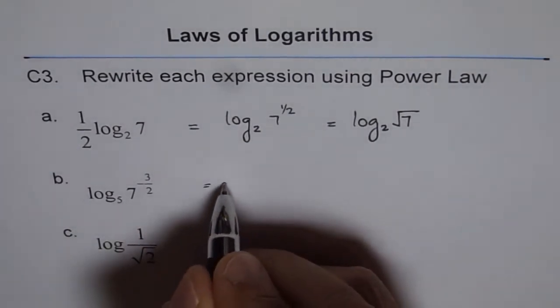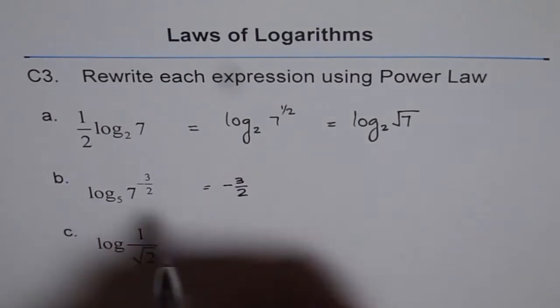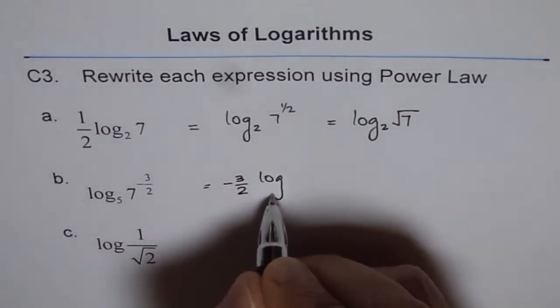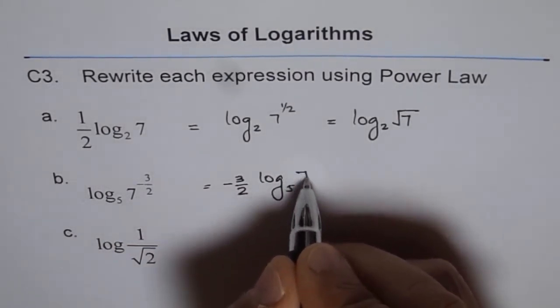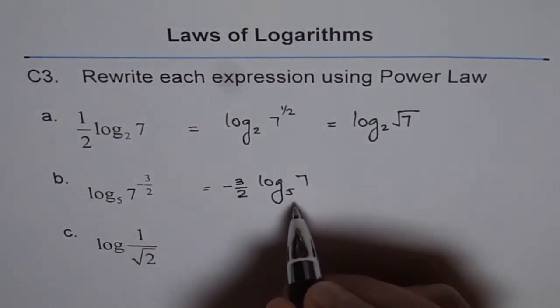So you get minus 3 over 2, minus 3 over 2 log base 7 of 5. So this should be written like this.